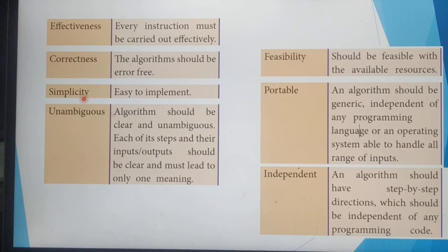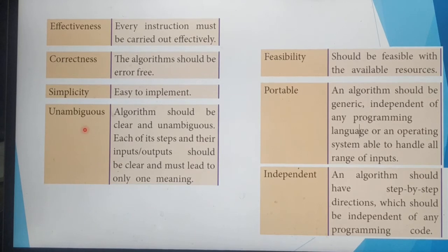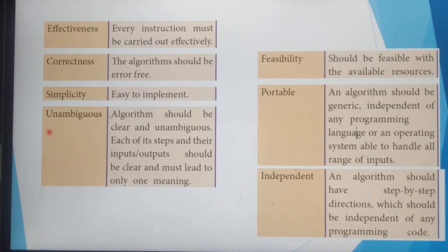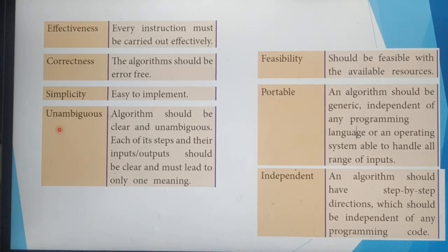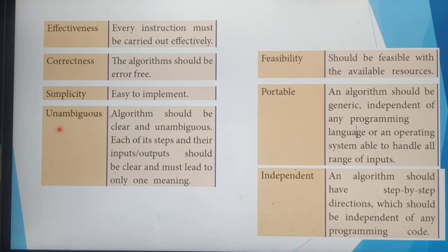The next characteristic is simplicity, which means the algorithm should be easy to implement. Another characteristic is unambiguous. Ambiguous means you are able to make more than one meaning. Our algorithm must be unambiguous — it should not be interpretable in more than one way, as that would cause confusion in implementation.